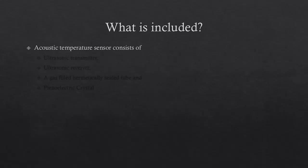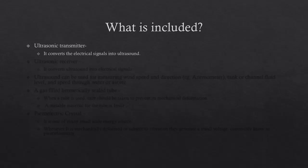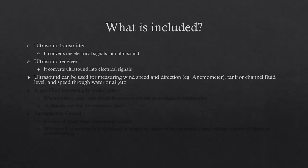Then, the Acoustic Temperature Sensor consists of ultrasonic transmitter, ultrasonic receiver, a gas-filled hermetically sealed tube, and piezoelectric crystal. Ultrasonic transmitter converts the electrical signals into ultrasound. Ultrasonic receiver converts ultrasound into electrical signals. Ultrasound can be used for measuring wind speed and direction, as well as anemometer, tank or channel fluid level, and speed through water or air, etc.